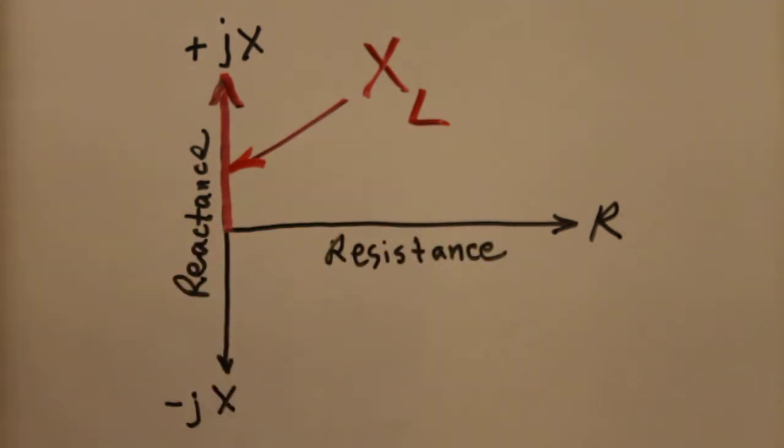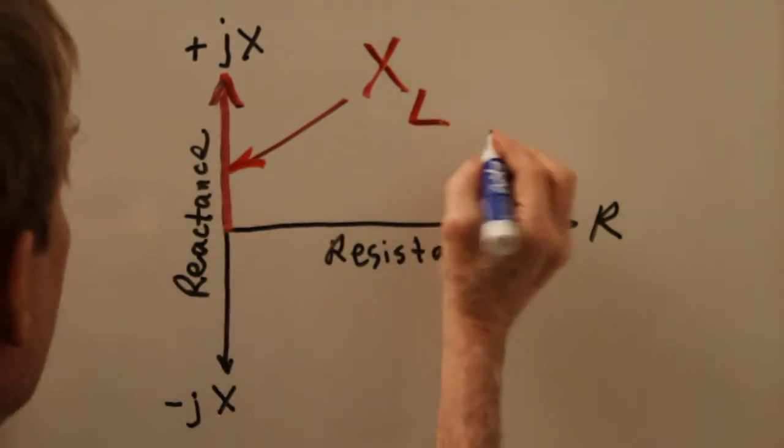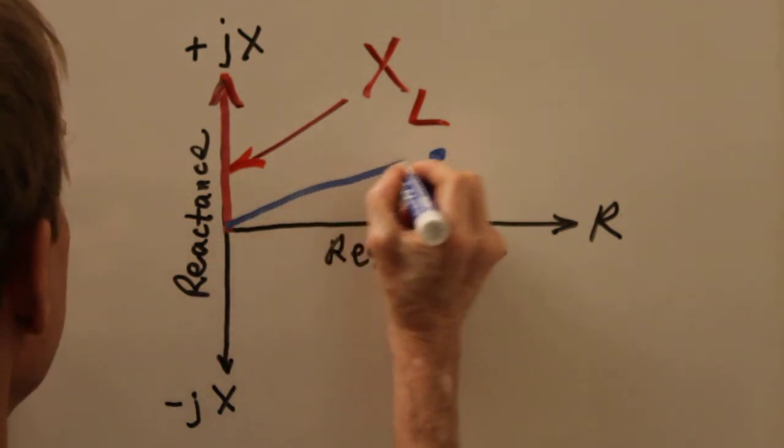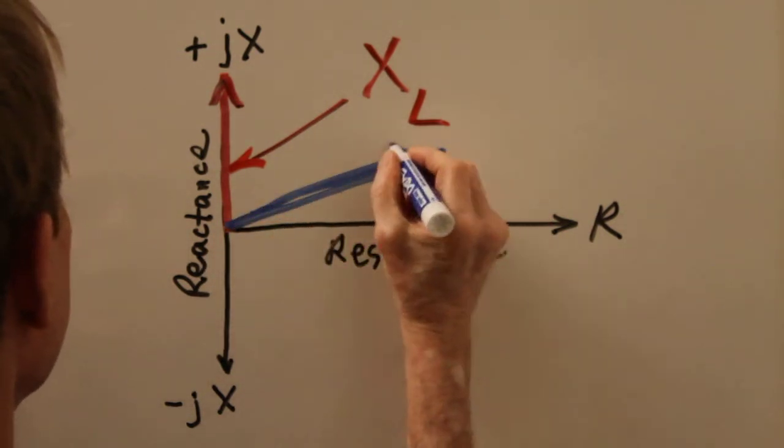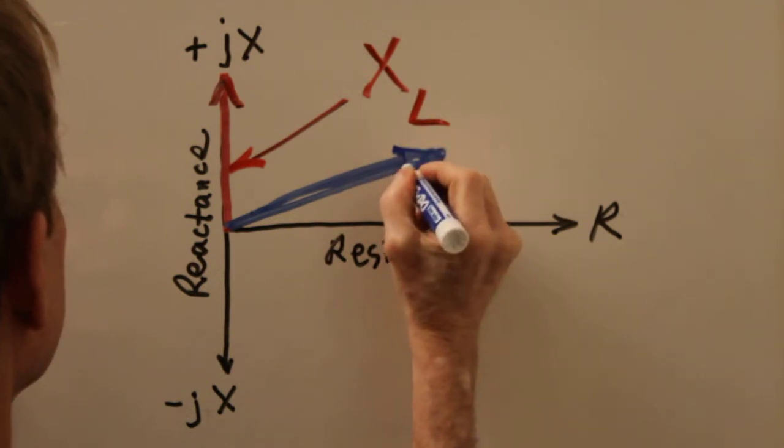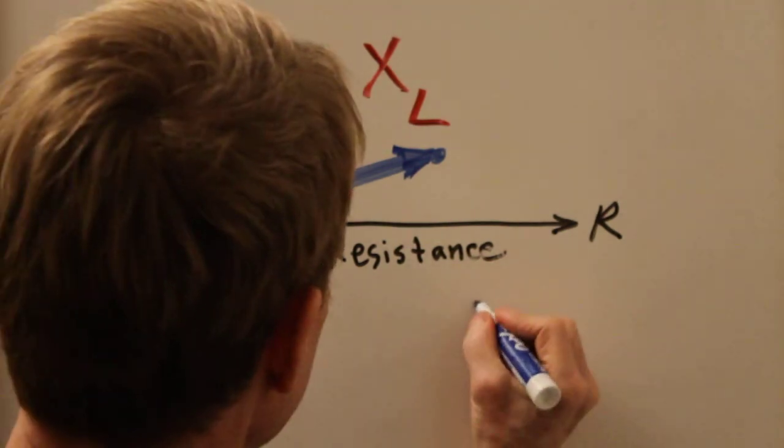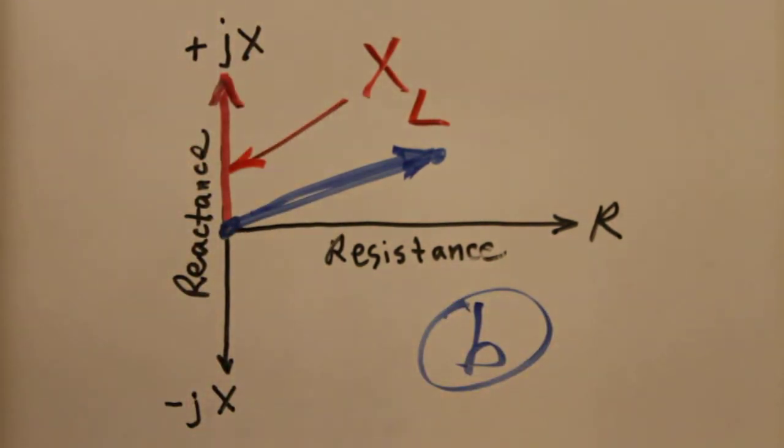And we can represent that by a vector running from the origin out to that point. But the correct answer to this particular question is B as in Bravo.